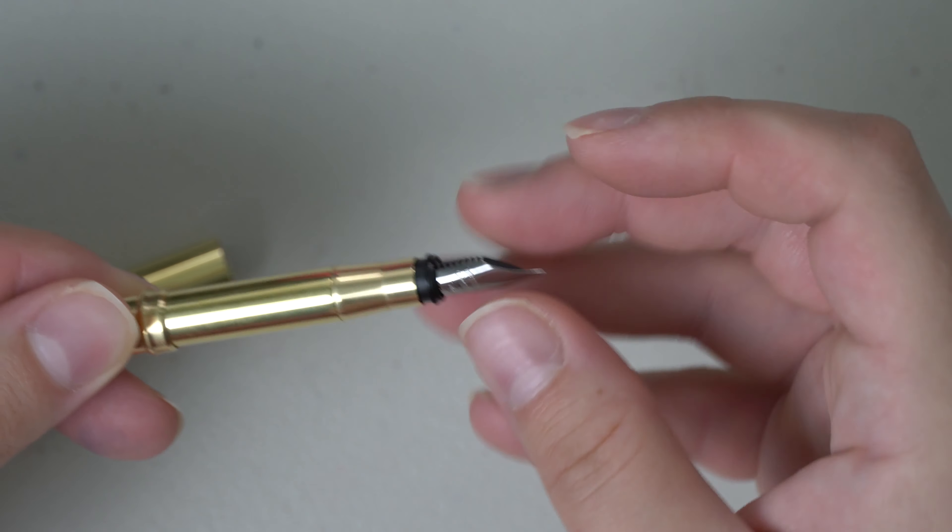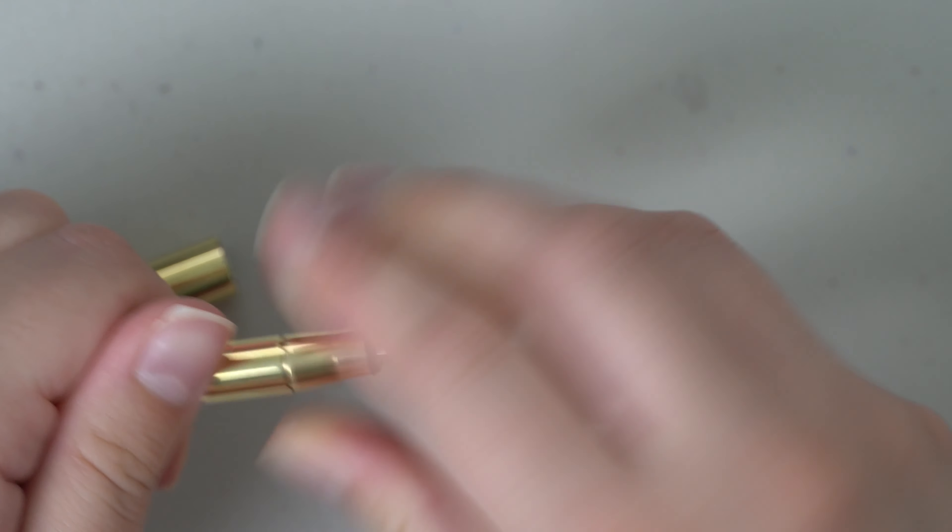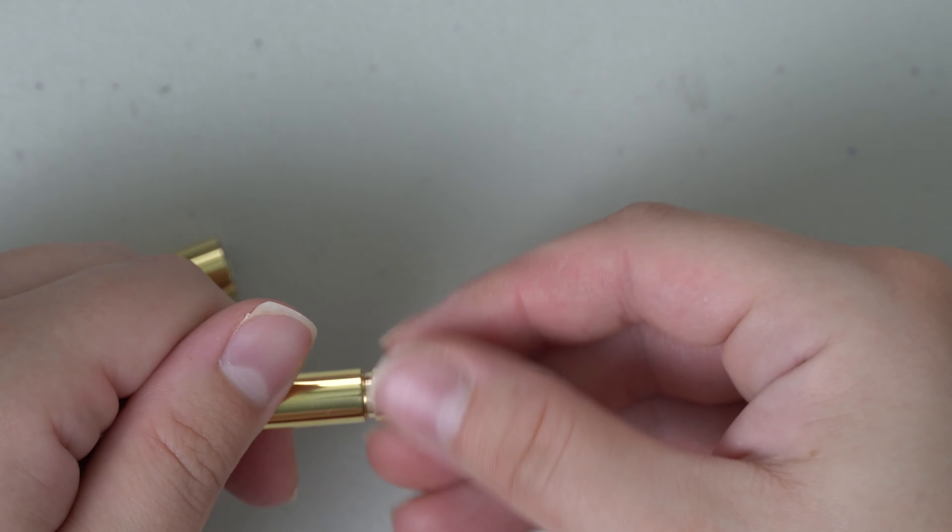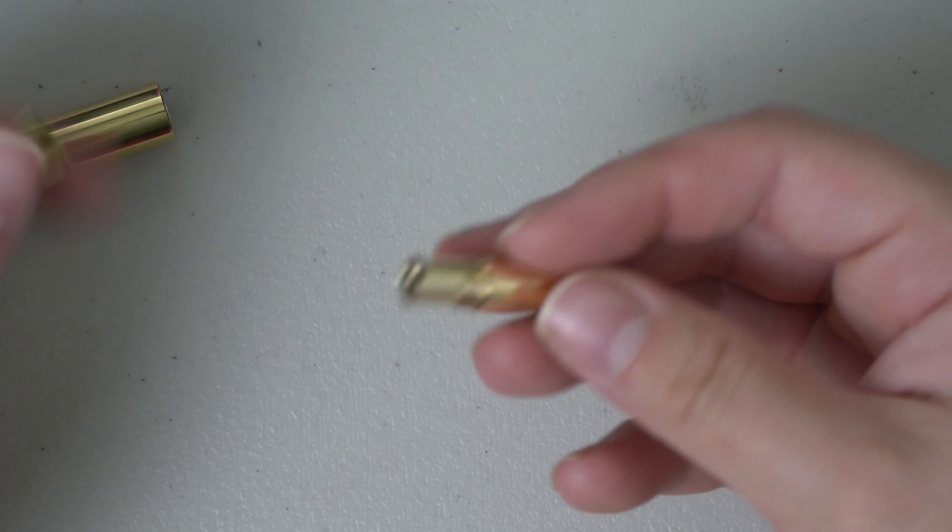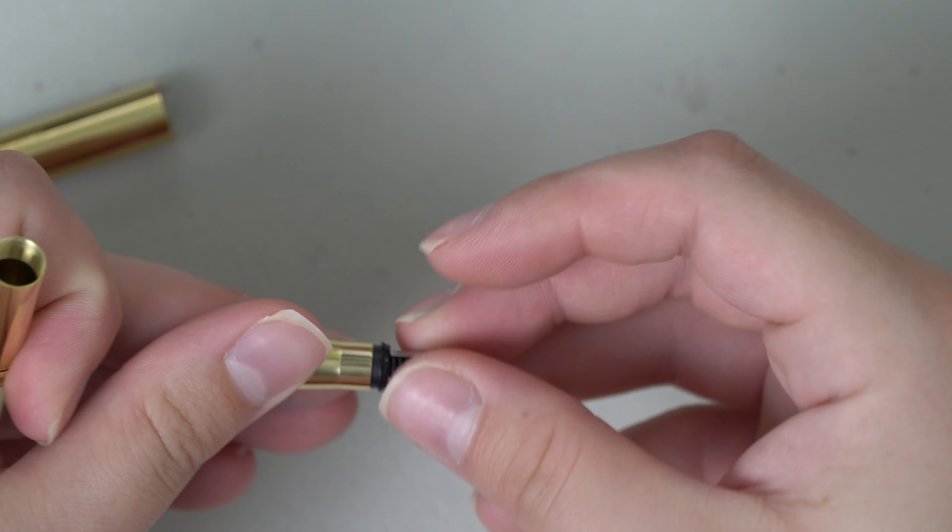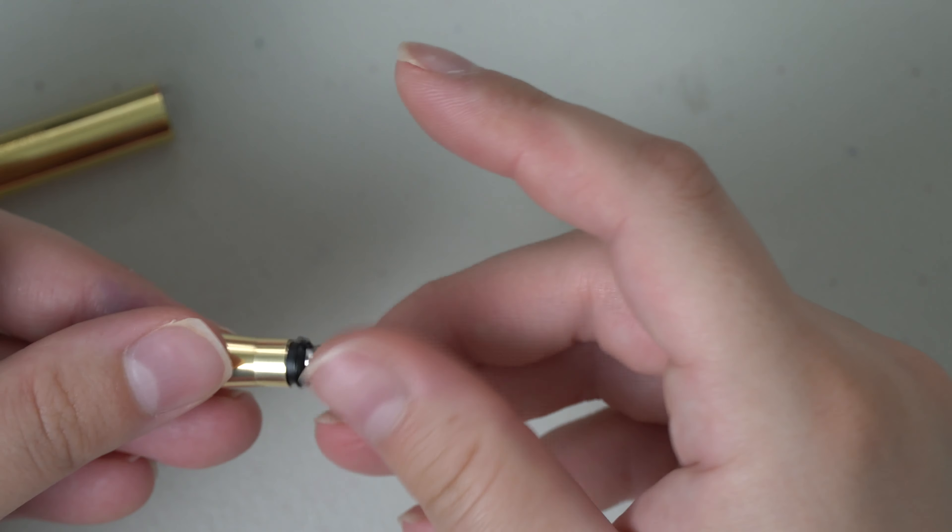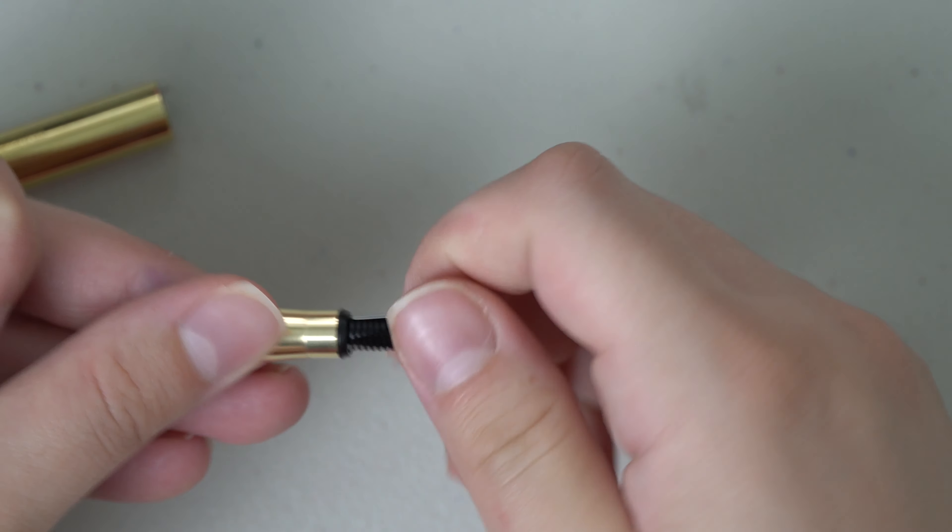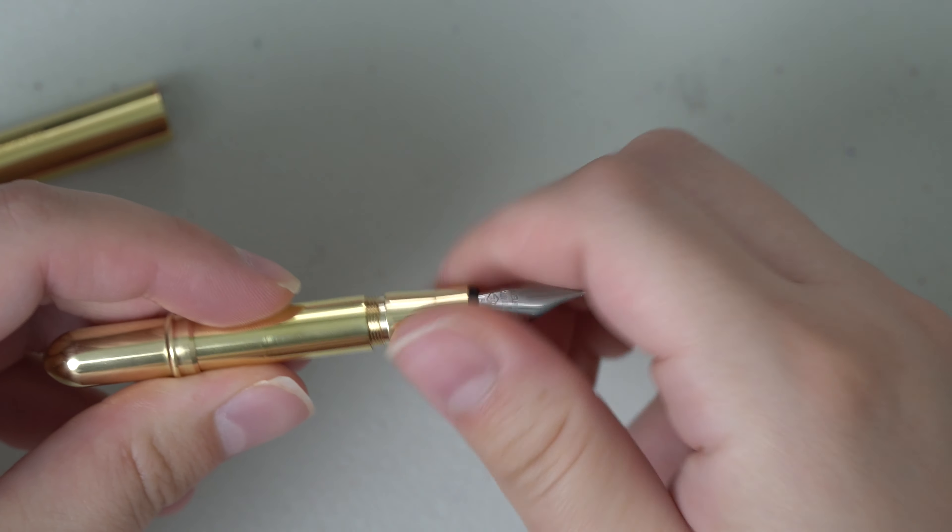You can also, I believe this section comes off too. Yeah. The metal section does come off as well. So I guess if you were able to get a similar nib size, you would be able to change out the nib just because that did unscrew very nicely.